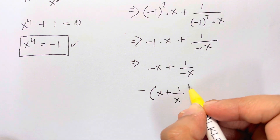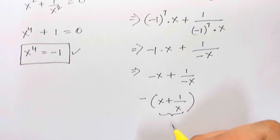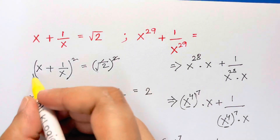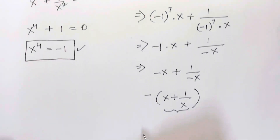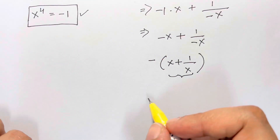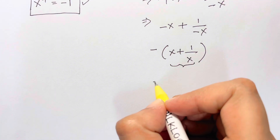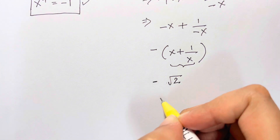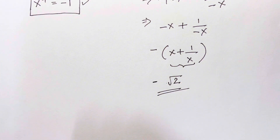And from the original equation, x + 1/x = √2. So substituting back, we get -√2. That's your answer! Thank you so much for watching — bye bye, take care.